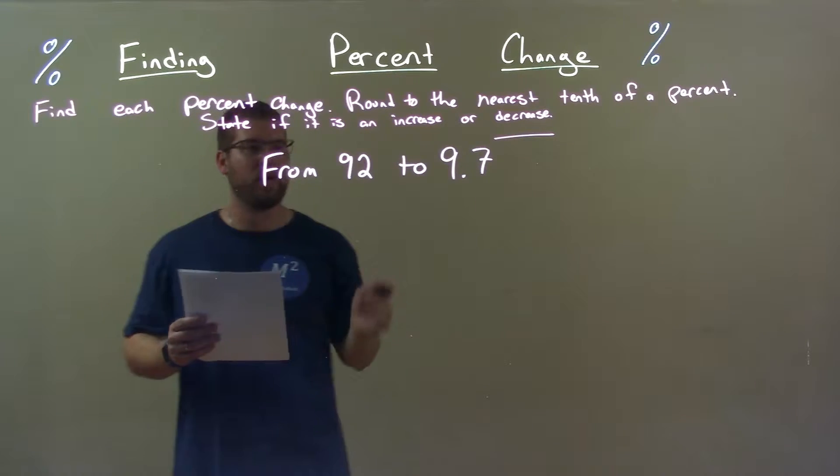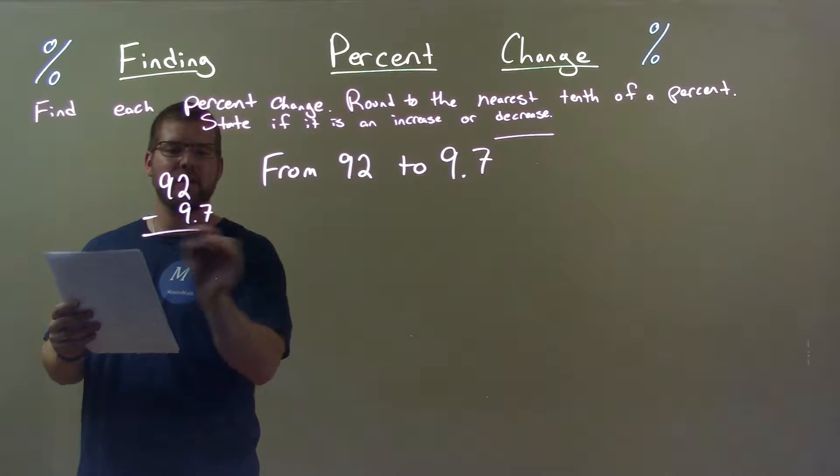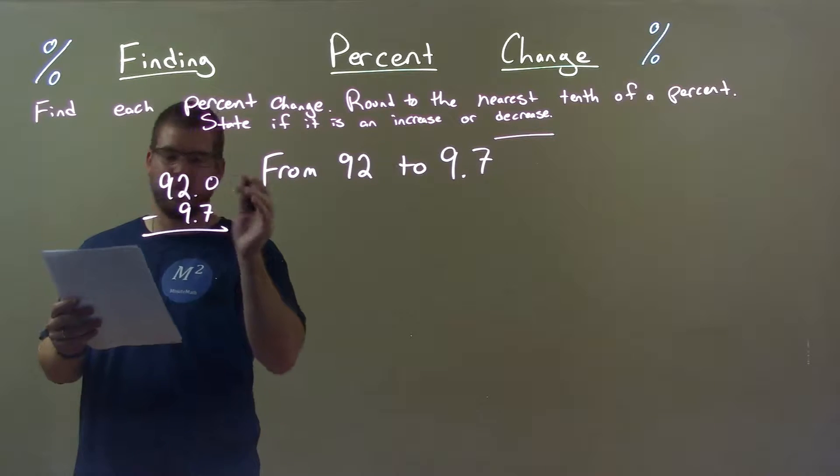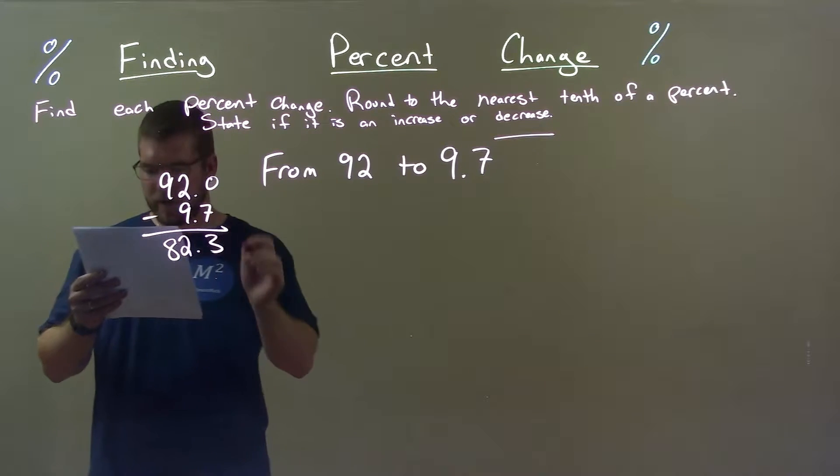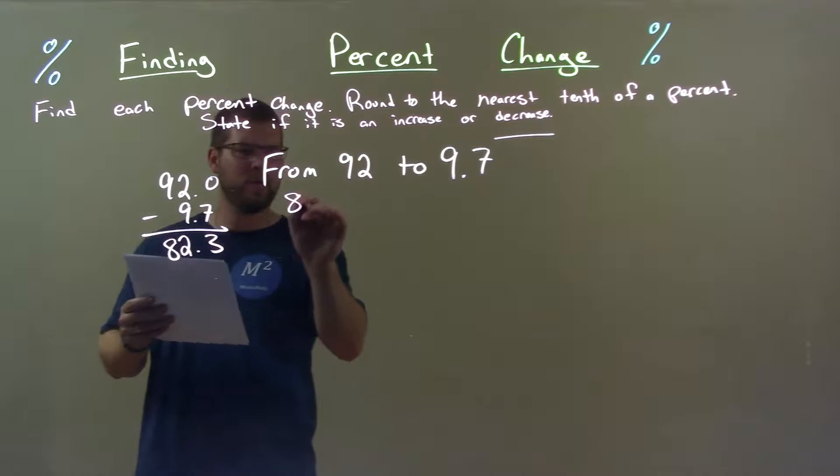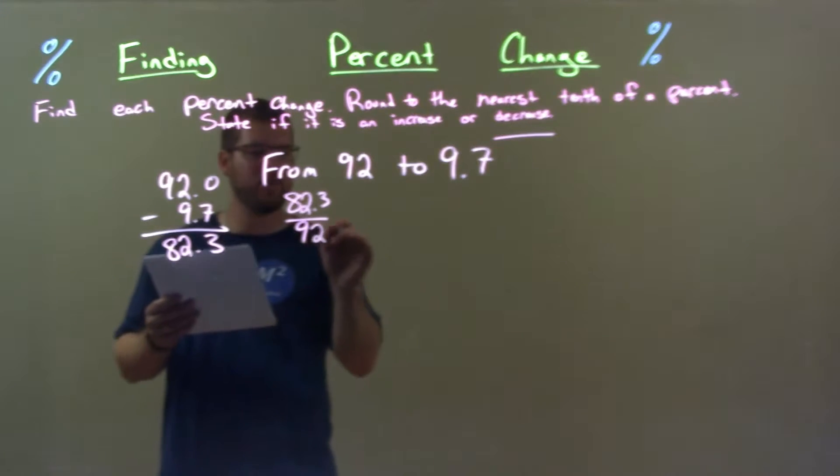We got a decrease going on, so difference between the two: 92 minus 9.7. 92 is 92.0. This comes out to be 82.3. 82.3 divided by the first number which is 92.